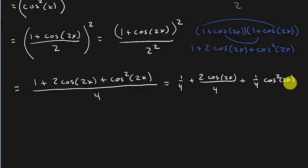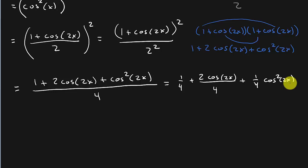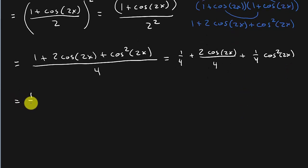And instead of writing this over 4, I'm going to write it as 1 fourth cosine squared 2x. And so this is 1 fourth plus, now 2 over 4, that reduces to 1 half cosine 2x plus 1 fourth cosine squared 2x. So all I did from this step to this step is I reduced the 2 fourths to 1 half. That's all I did.